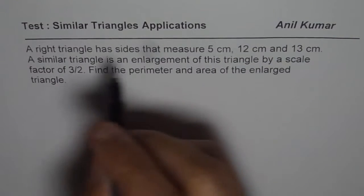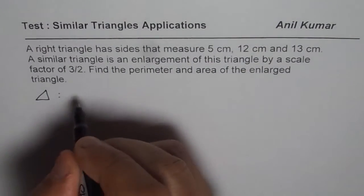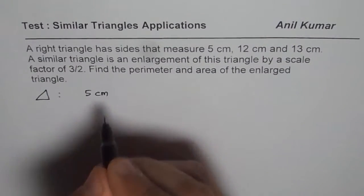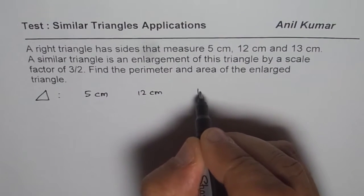So now we are given a right triangle. Right triangle, let me say like this, whose sides are 5 cm, 12 cm and 13 cm.